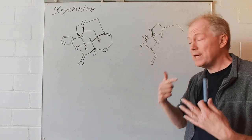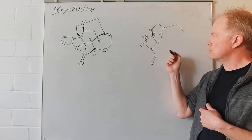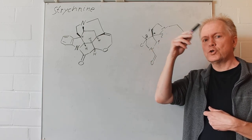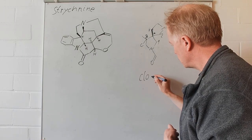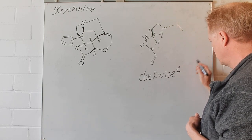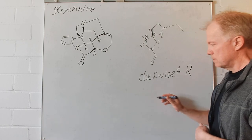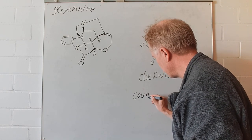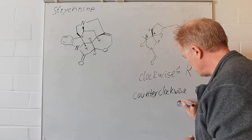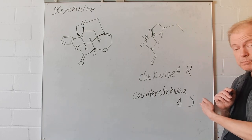So, we have to imagine that we move behind the white screen. And then we can count from the one to the two to three. This is clockwise and clockwise is then assigned as configuration R. Counterclockwise becomes the descriptor S.